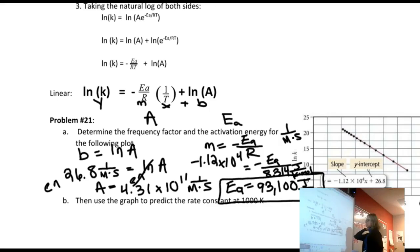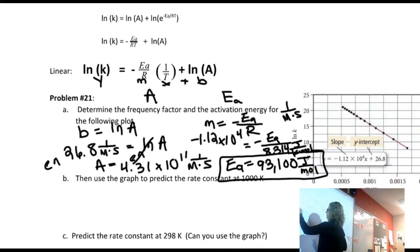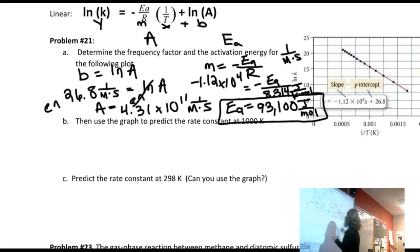Letter B says, then use the graph to predict the rate constant at 1000 Kelvin. Well, you have to think about, what's 1000 Kelvin on the graph? 1000 Kelvin on the graph is 0.001, one over 1000. And then I have to come up here and see what I think it is going to be for the natural log of K. And I know this is 15, this must be 17.5, this must be 20. And so I approximated it to be about 15.5.